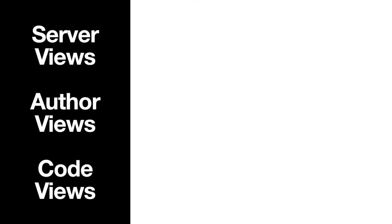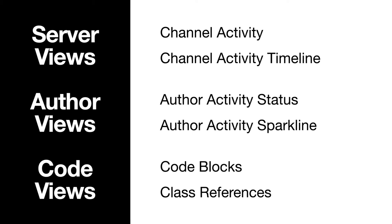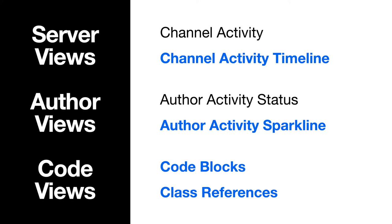In the paper we present 6 views in 3 different categories. We will now focus on one view for each of the server views and author views, and the two main views related to source code, which are code blocks view and class references view.